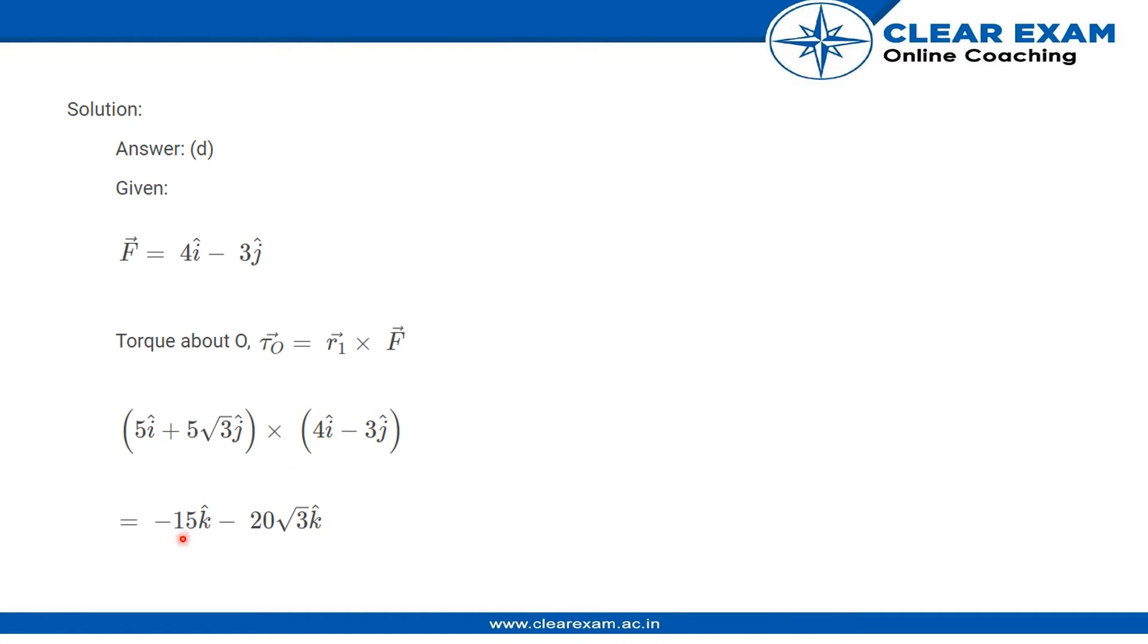On crossing these two vectors, we get the torque vector about O to be equal to -15k - 20√3k.